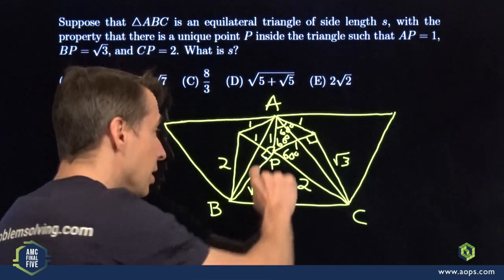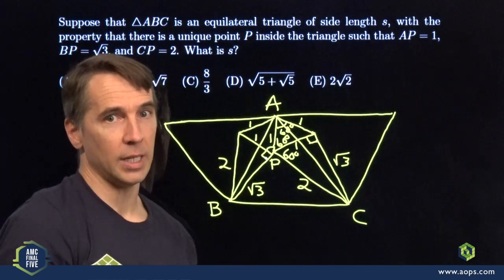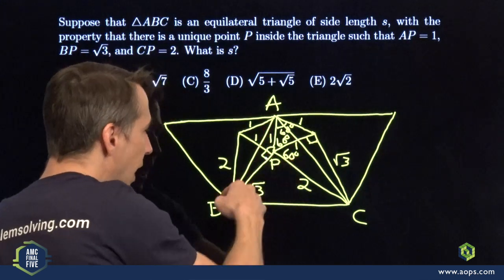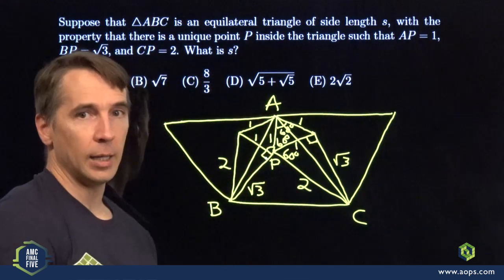That means this is a 90 degree angle. This is 90, this is 60 degrees, this whole angle in here, APB, 150 degrees. So now we've got 1, we've got root 3, we've got that 150 degrees in there, and we could use the law of cosines again to find AB.